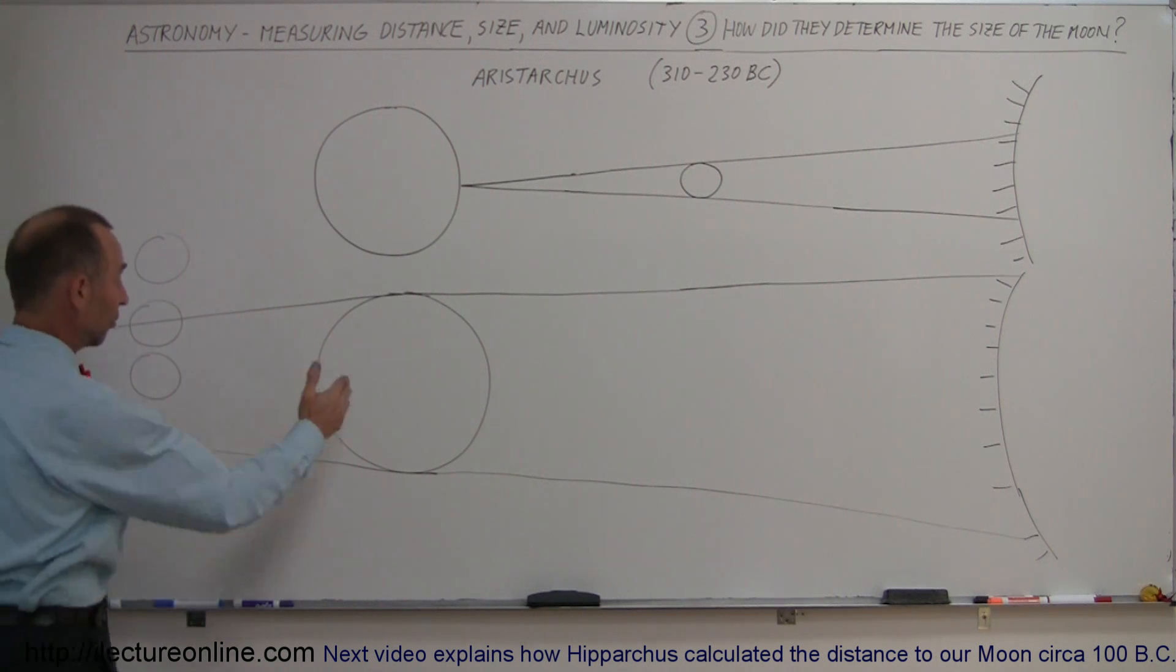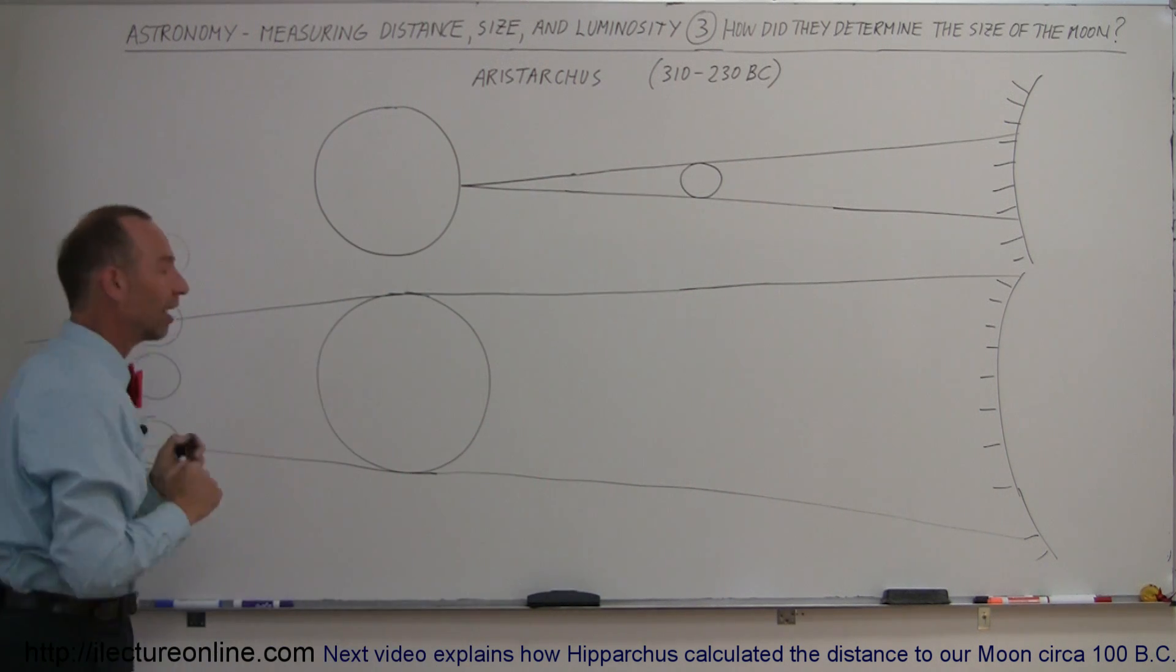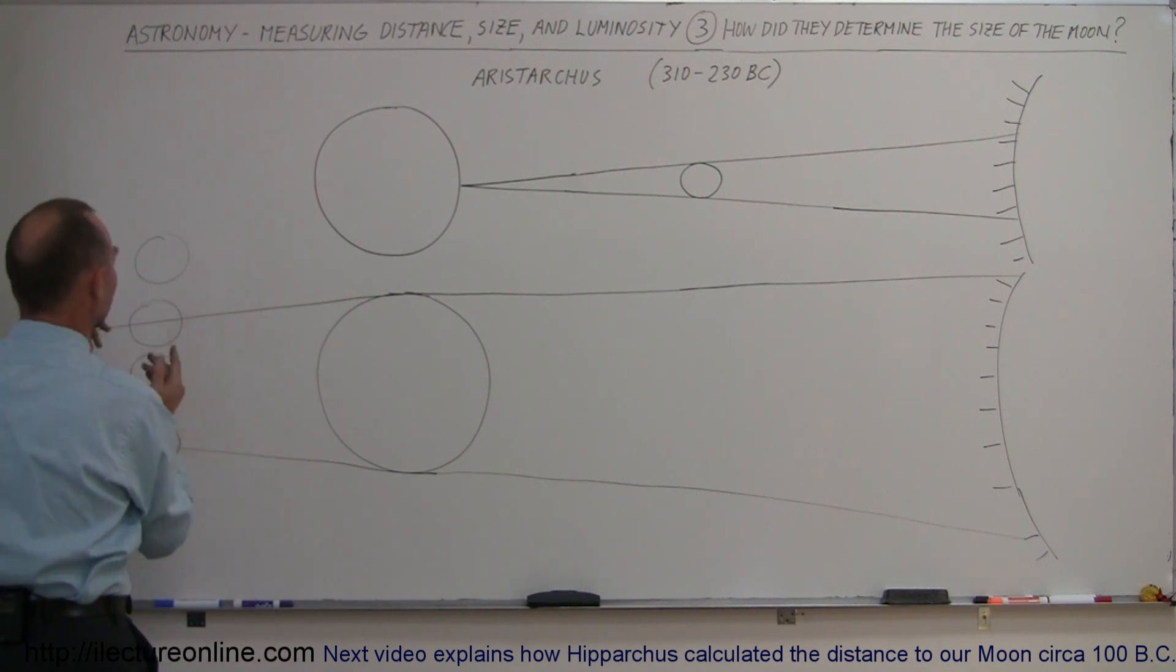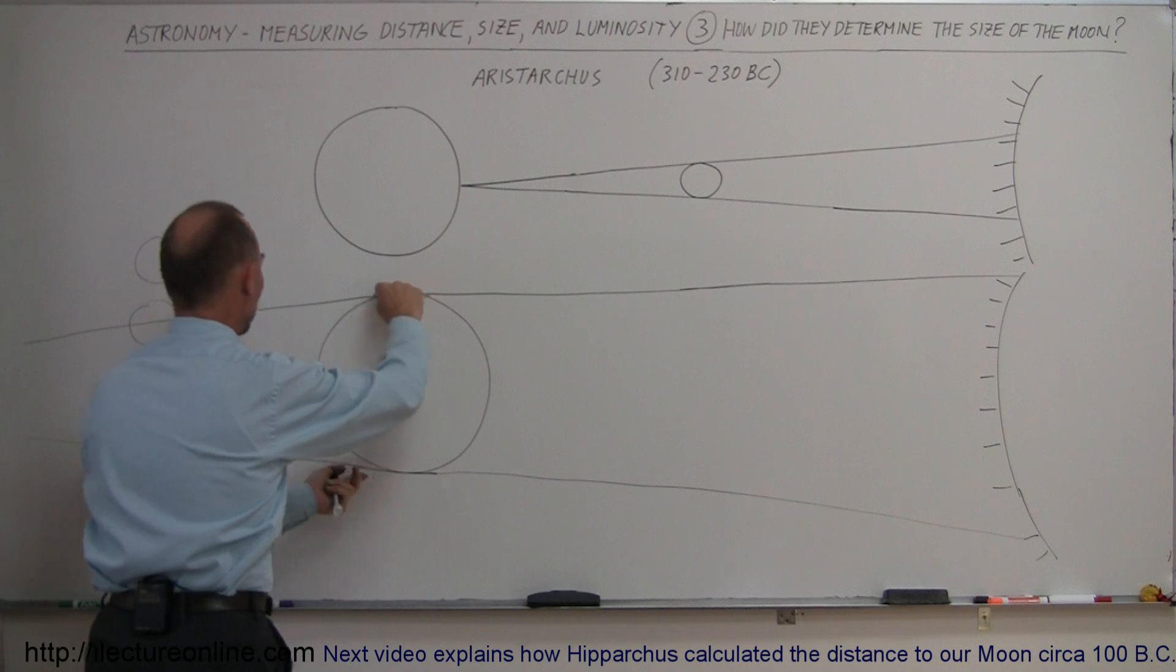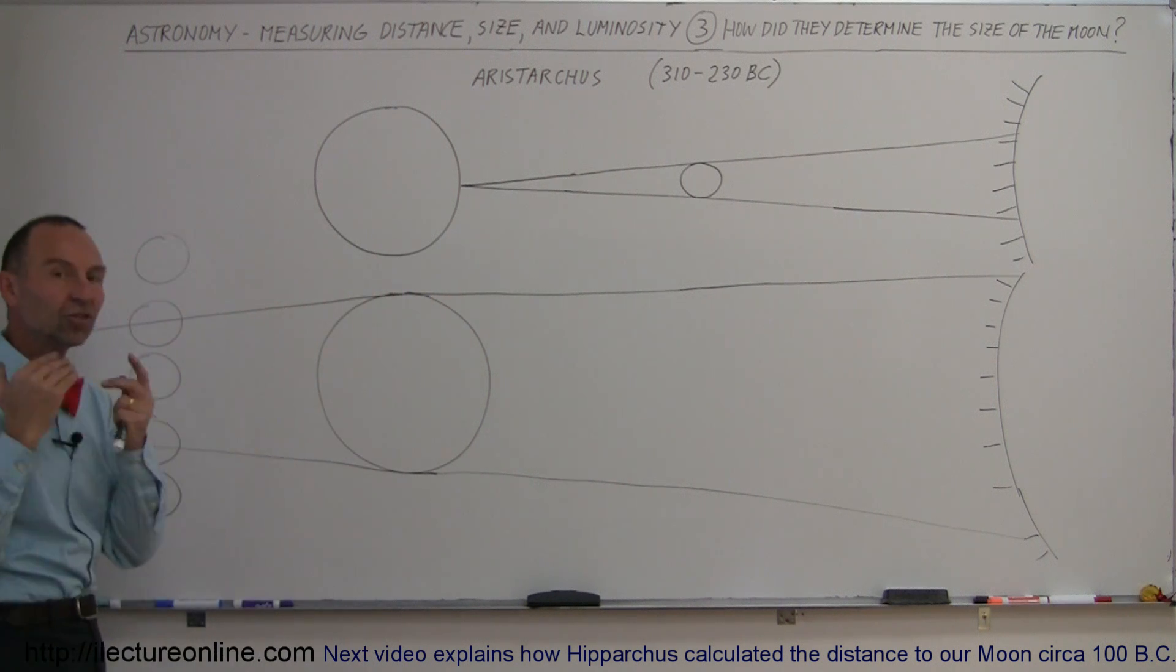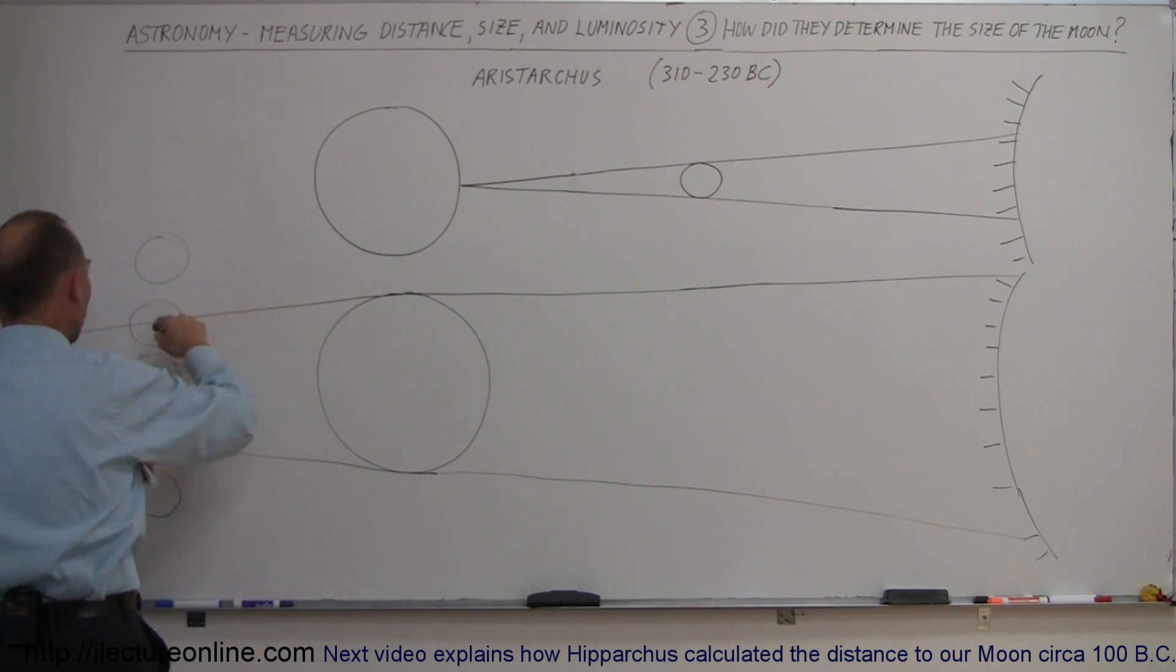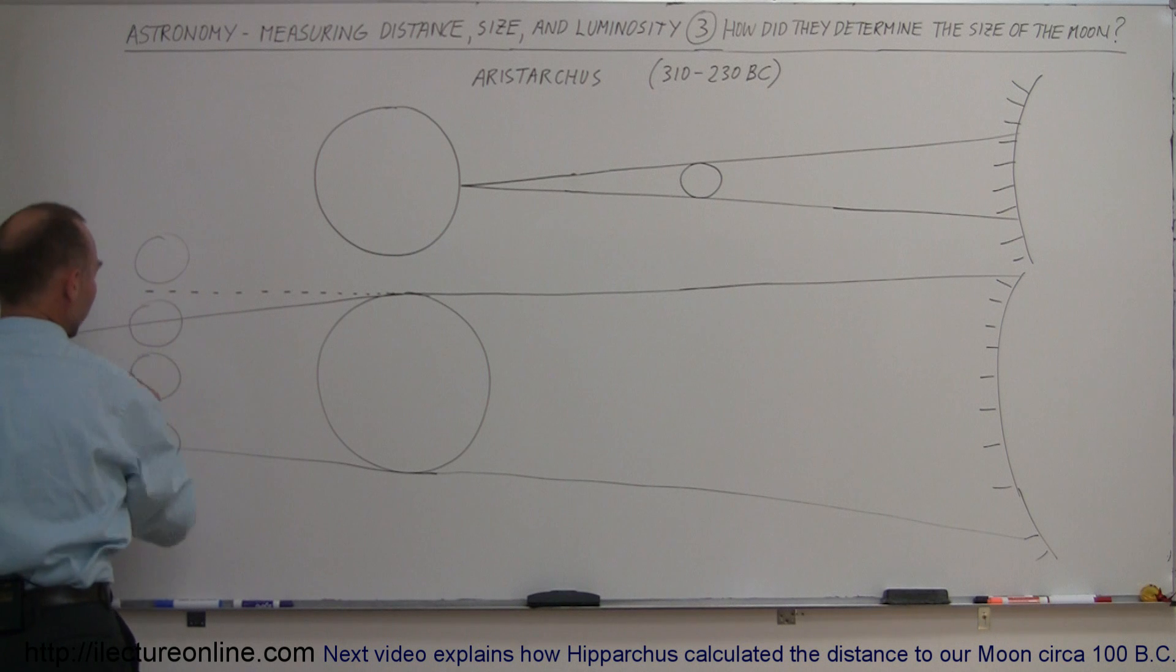And they assumed that that distance from the Earth to the moon would be the same as from the moon to the Earth on the other side. And so they assumed that the Earth's shadow tapered in the very same way, in such a way that the diameter of the Earth right here would be diminished, at least the shadow of the Earth, would be diminished by one moon diameter by the time it reached the position of the moon.